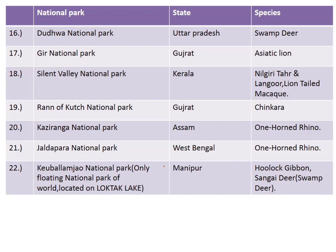Dudhwa National Park is in the state of Uttar Pradesh and is famous for the swamp deer. Next is Gir National Park in the state of Gujarat, famous for the Asiatic lion — also known in Hindi as 'babbar sher'.